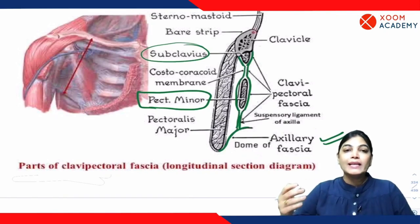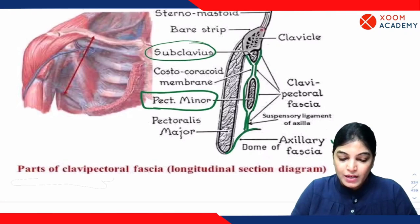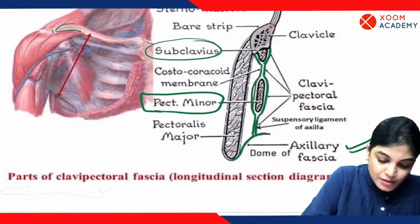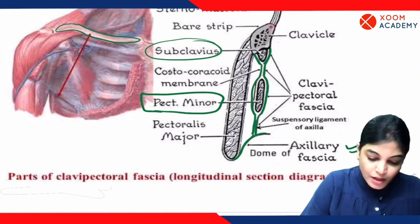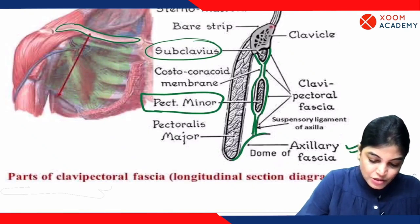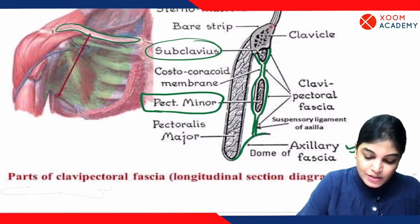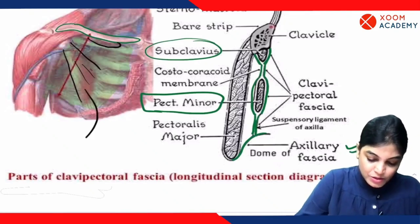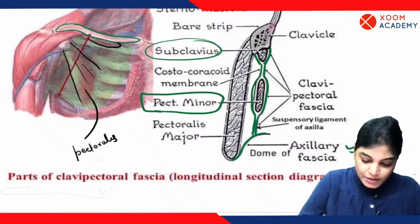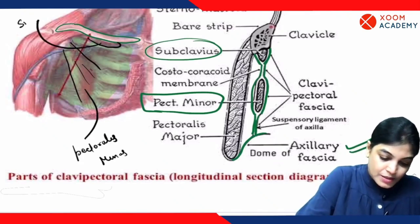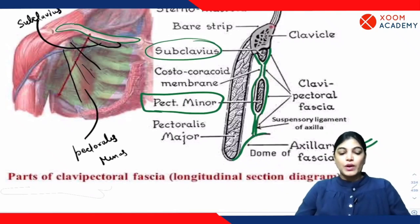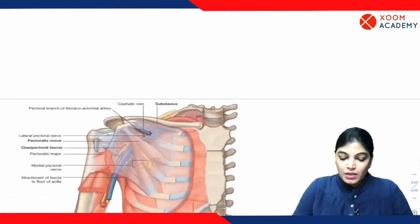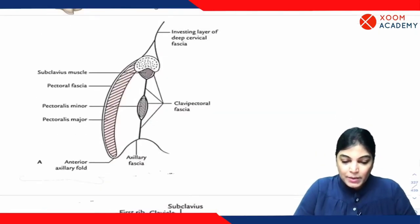In the vertical extent, we can clearly see it enclosing two muscles: pectoralis minor and subclavius. Let me show you another image where you can appreciate the same. This is the clavicle bone; lower to the clavicle, this is the fascia — the sheet attached to the inferior aspect of the clavicle. You can clearly see it enclosing pectoralis minor muscle and subclavius muscle. This is all about the vertical extent.